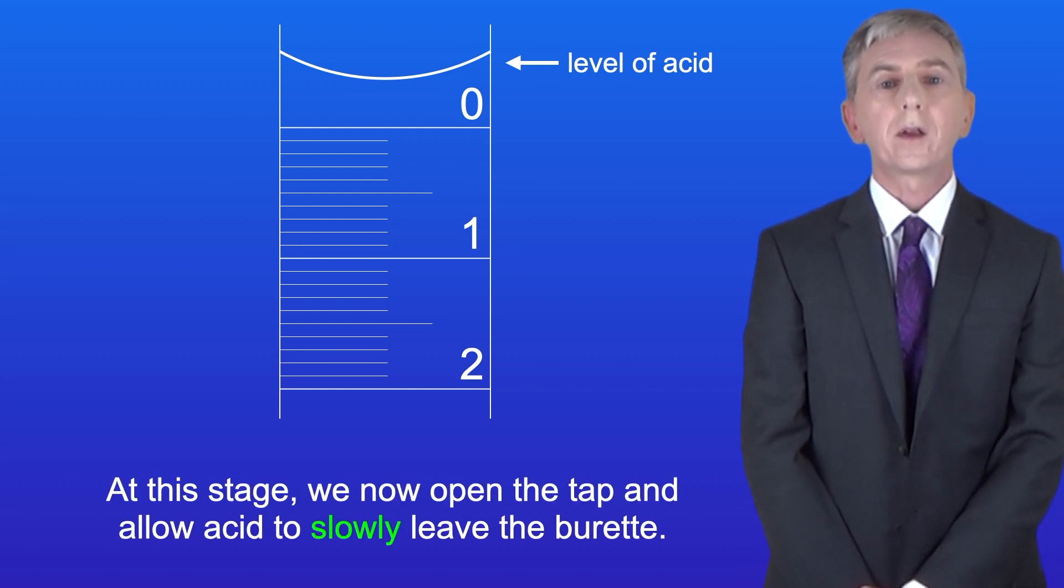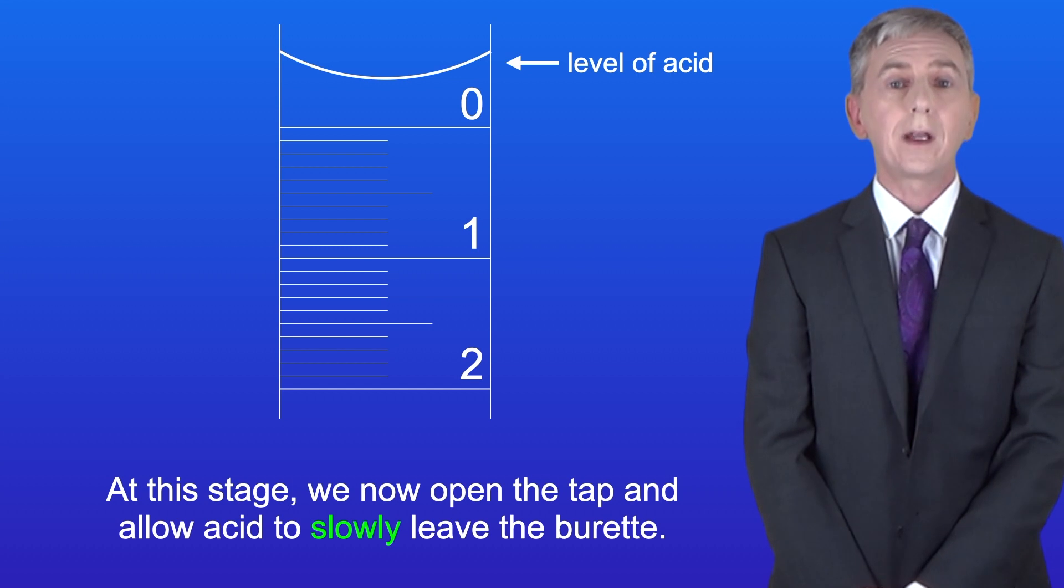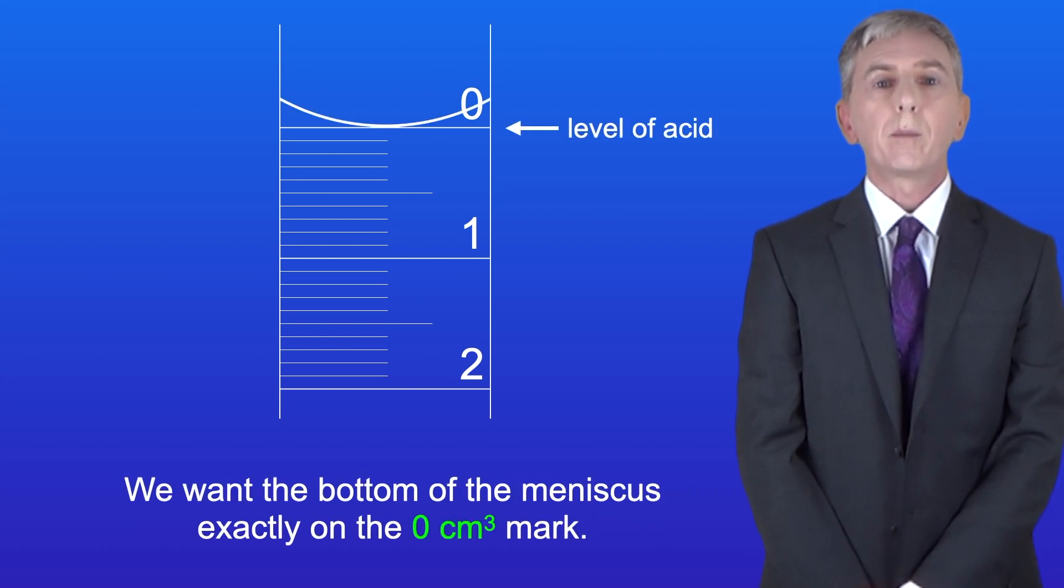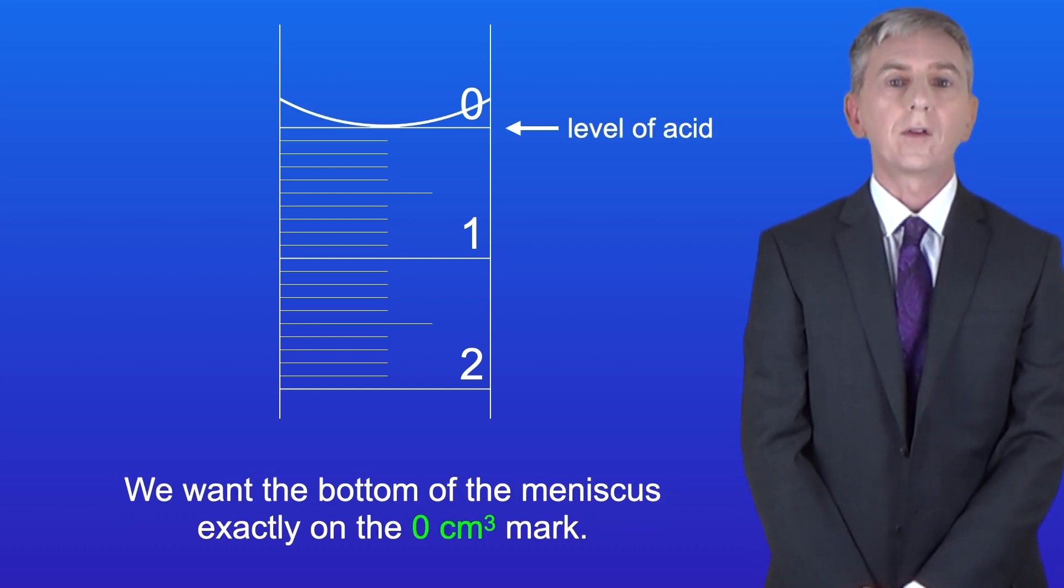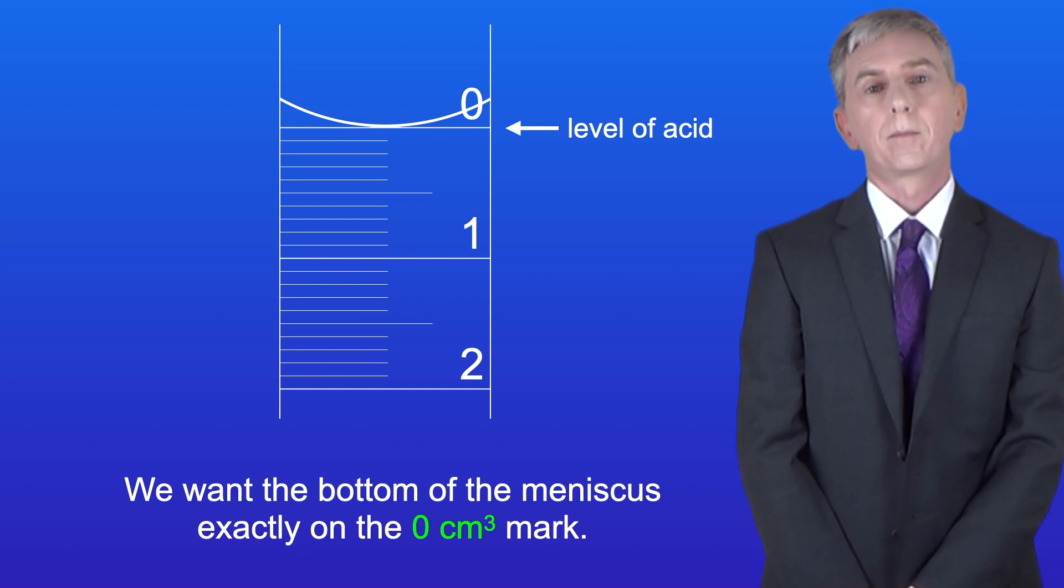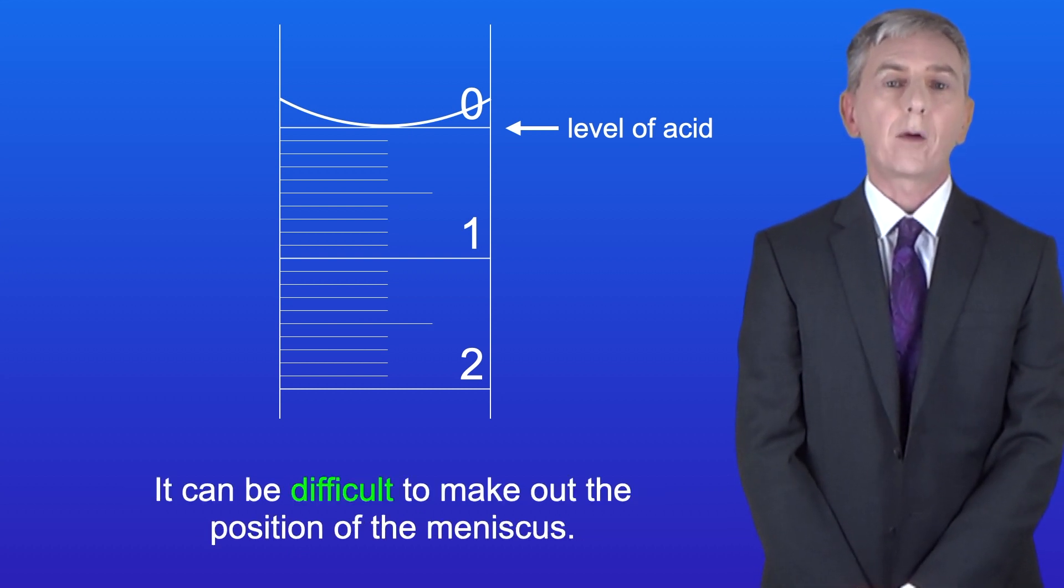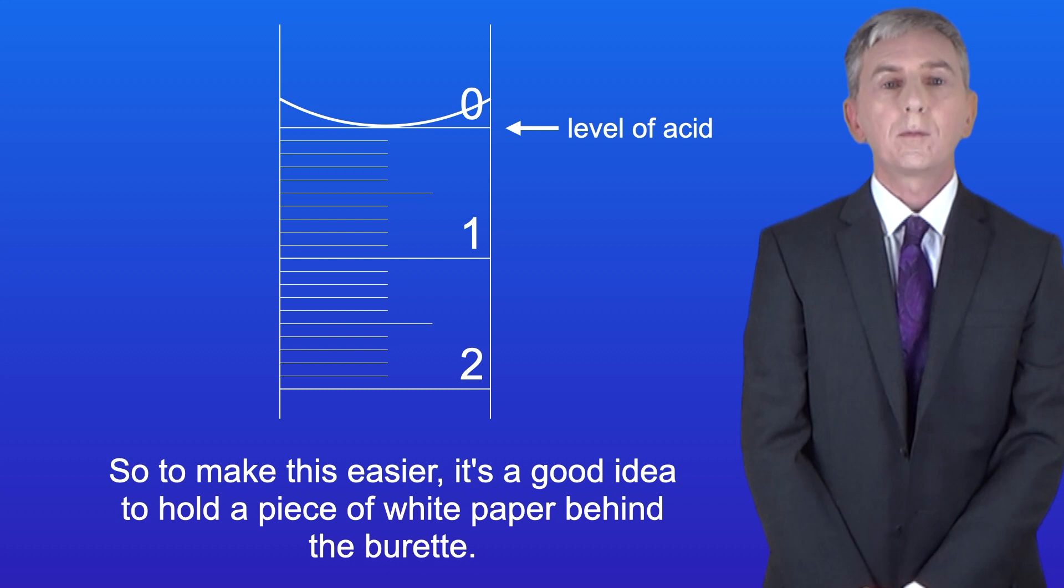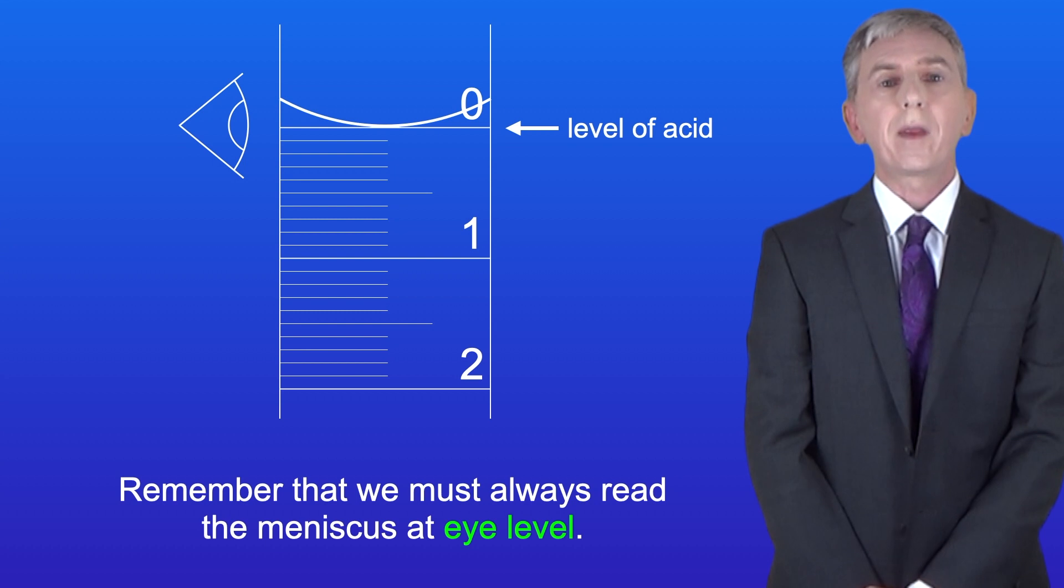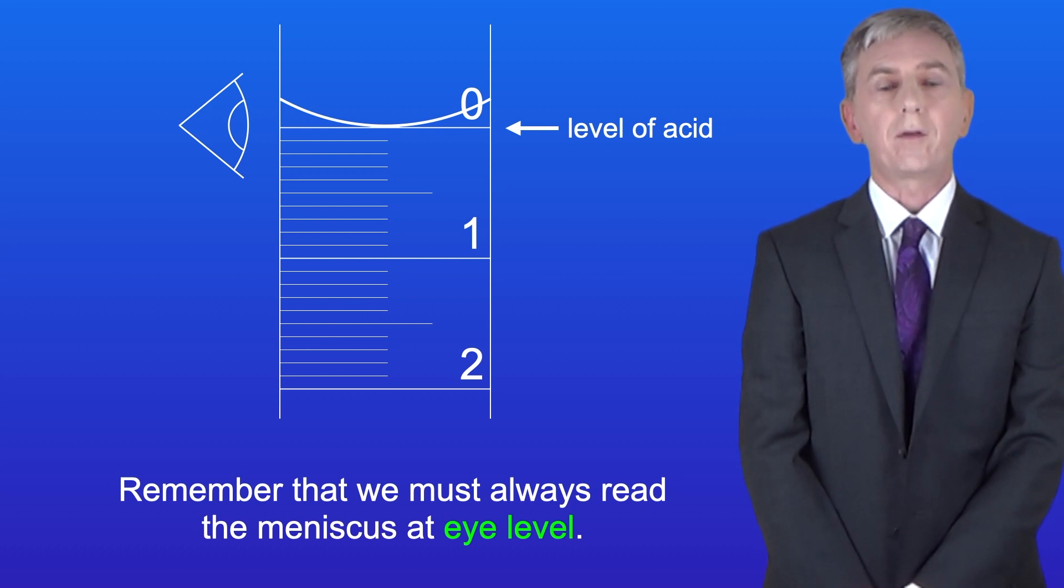At this stage we now open the tap and allow acid to slowly leave the burette. We want the bottom of the meniscus exactly on the zero cm³ mark. Now it can be difficult to make out the position of the meniscus so to make this easier it's a good idea to hold a piece of white paper behind the burette and remember that we must always read the meniscus at eye level.